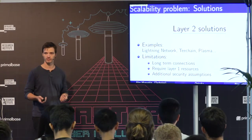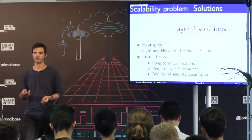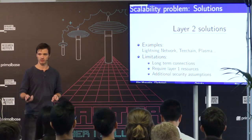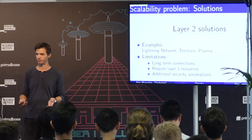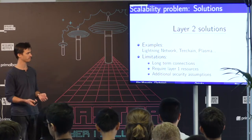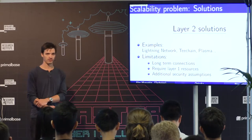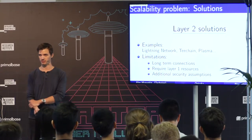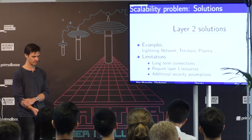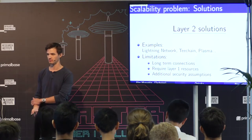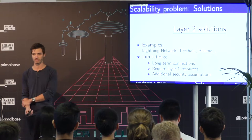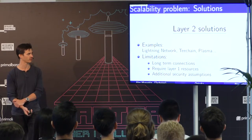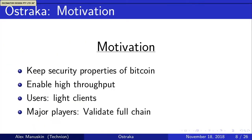Another solution, not the main topic of this workshop but worth mentioning, is layer two solutions. With layer two, you open a payment channel or state channel and communicate between two parties — not all transactions need to go on the blockchain, so overall throughput increases. However, layer two solutions have limitations: they're mostly suitable for long-term transactions and micro-payments. For buying a cup of coffee you'd still need a layer-one transaction, and they often require additional security assumptions, such as a deposit locked on the blockchain or a trusted execution environment.